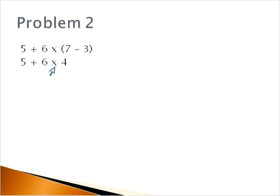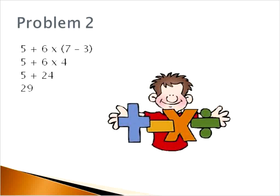Now we have addition and multiplication. Which comes first? Multiplication. So we'll do that. 6 times 4 is 24. 5 plus 24, that's our last operation, will give us 29. Very nicely done.